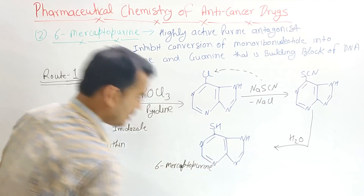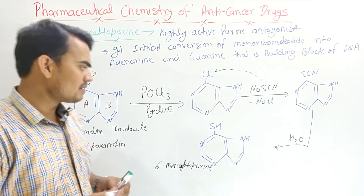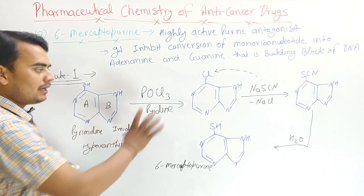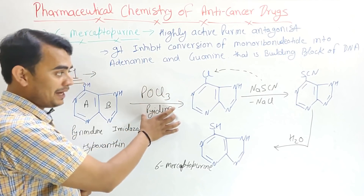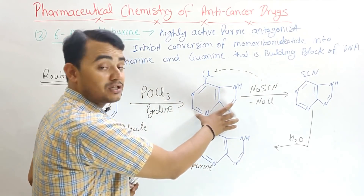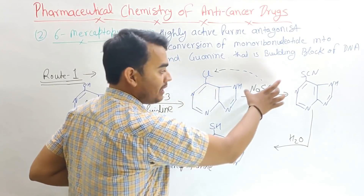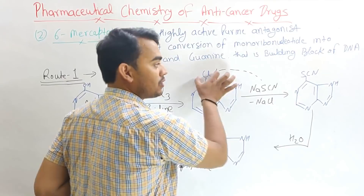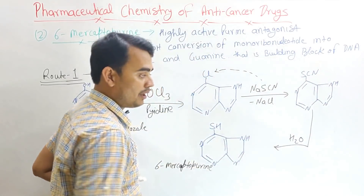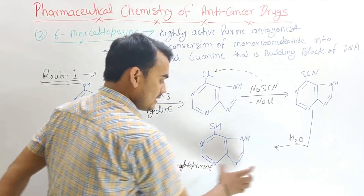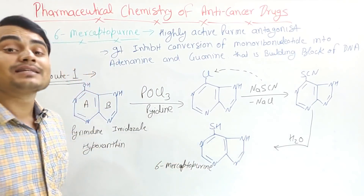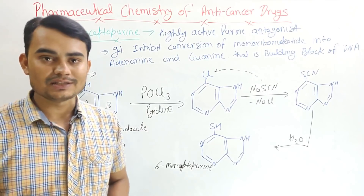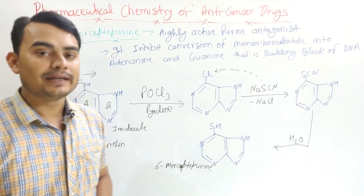So this is the basic, simple steps synthesis of 6-mercaptopurine. Firstly, hypoxanthine reacted with phosphoryl chloride in the presence of pyridine to form 6-chloropurine. When 6-chloropurine reacted with sodium thiocyanate, the thiocyanate group replaced the chloride to form 6-thiocyanate purine. On hydrolysis, this was converted to form 6-mercaptopurine. This is the first route.